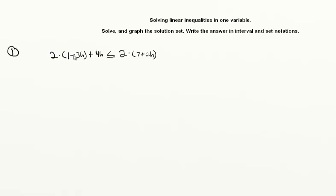We are given two times the quantity one minus three h, plus four times h, is less than or equal to two times the quantity seven plus two h. One way we could do this is simply divide all the terms by two, but most people will simply distribute the two on each side as the first step.